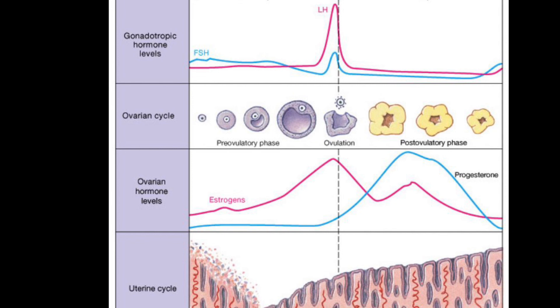If fertilization does not occur, the corpus luteum degenerates into a small white fibrous scar called the corpus albicans. The resulting decline in progesterone results in menstruation.